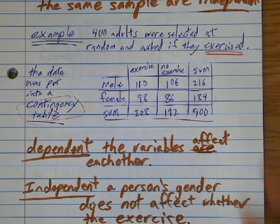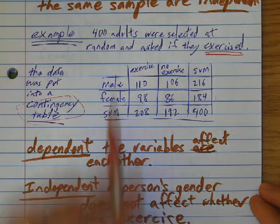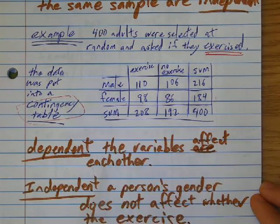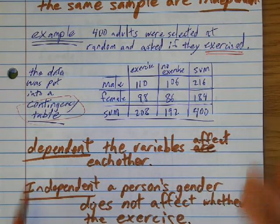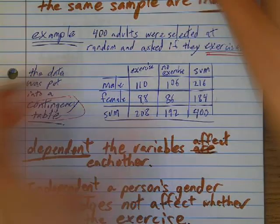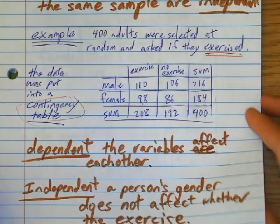So chi-squared basically collects, it uses data, and comes up with a calculation to determine whether things are dependent or independent. So I'm going to use this example to help find our chi-squared populations.